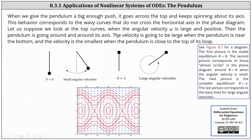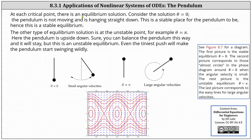Suppose we look at the top curves when the angular velocity omega is large and positive, along this trajectory here. Then the pendulum is going around and around its axis. The velocity is going to be large when the pendulum is near the bottom, and the velocity is smallest when the pendulum is close to the top of its loop. At each critical point there is an equilibrium solution. Consider the solution theta equals zero: the pendulum is not moving and is hanging straight down. This is a stable place for the pendulum to be, hence this is a stable equilibrium.